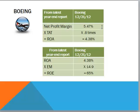What we saw from Boeing is a profit margin of 5.47%, a total asset turnover of less than one, which gave them a return on assets of 4.38% — less than their profit margin. But when we take that return on assets and multiply it times their equity multiplier of 14.9, we get that return on equity of 65%. So their return on equity is definitely driven by leverage.